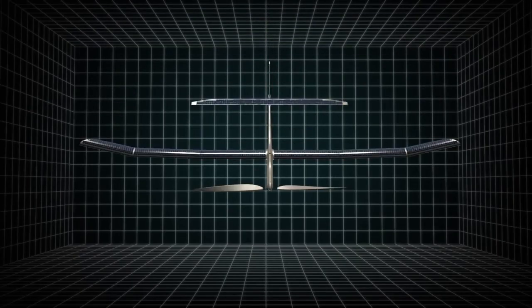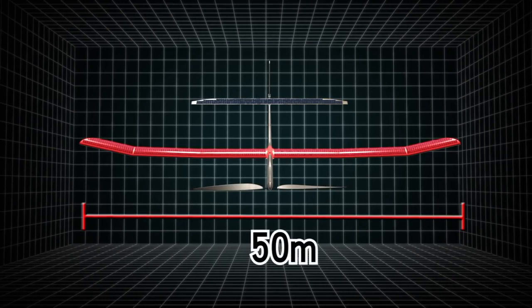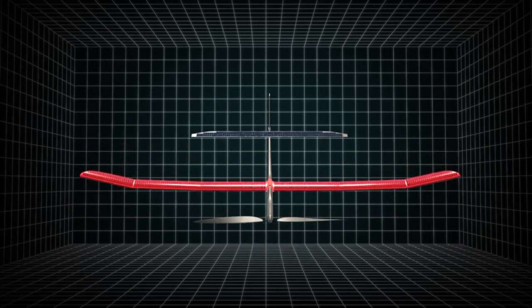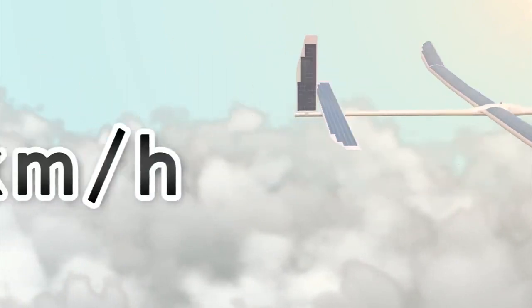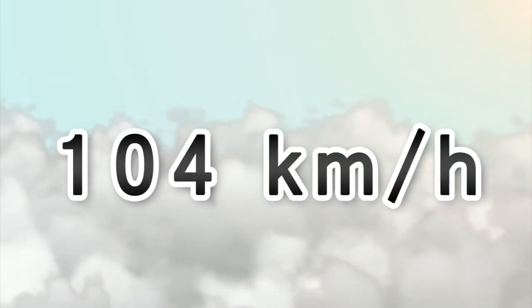Despite its massive size, Solara only weighs 160 kilograms and can carry a payload of 32 kilograms. It can cruise at speeds of up to 104 kilometers an hour, about 64 miles per hour.